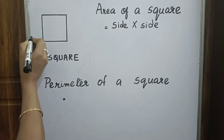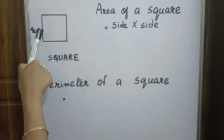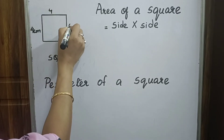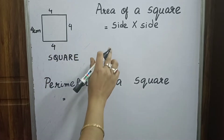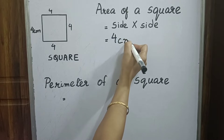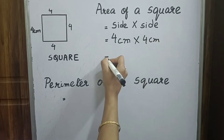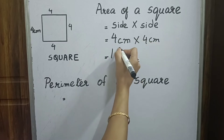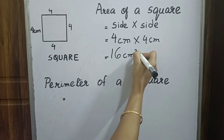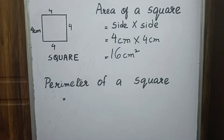So if one side of a square is 4 cm, we know that a square has all 4 sides equal, so the other 3 sides are also 4 cm. Side into side equals 4 cm into 4 cm, which is equal to 16 cm². So the area of a square equals side into side.